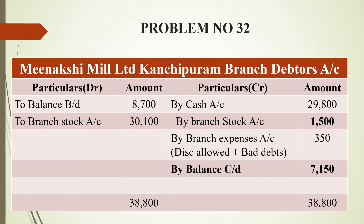Next is the branch debtors account. Opening debtors is Rs. 8,700. By branch stock account — credit sales — Rs. 30,100 on the debit side. On the credit side: by cash account Rs. 29,800 (cash received from debtors), and by branch stock account Rs. 1,500 (goods returned by debtors).